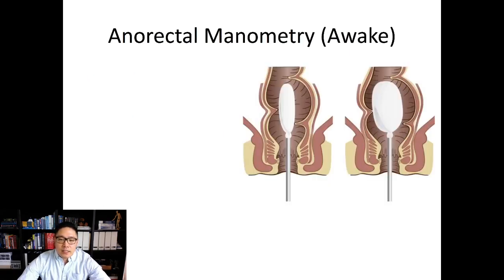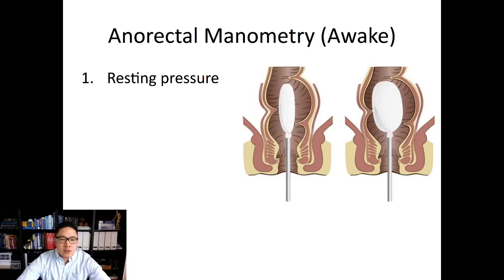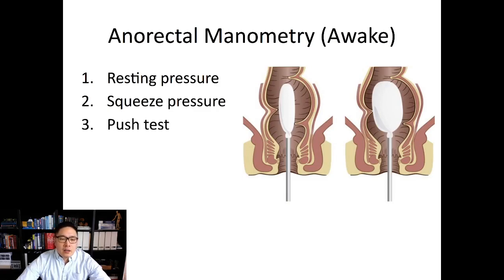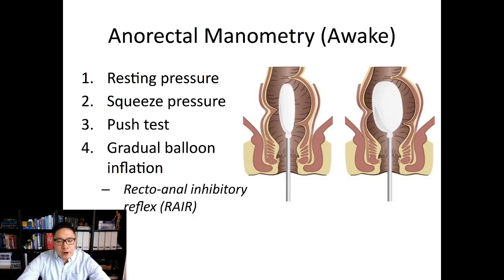This is what the catheter and balloon look like inside the anal canal and rectum. When patients are awake, the test again goes through several phases. First, we measure the resting pressure of the anal sphincter. We ask them to squeeze, measuring their squeeze pressure. We ask them to push. And then the nurse will gradually inflate the rectal balloon to look for the RAIR and to measure rectal sensory thresholds.